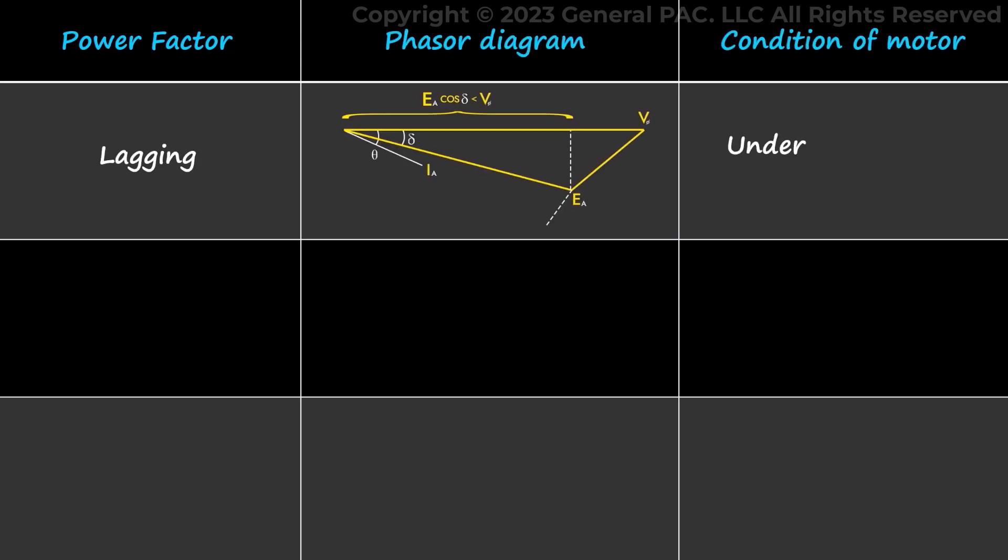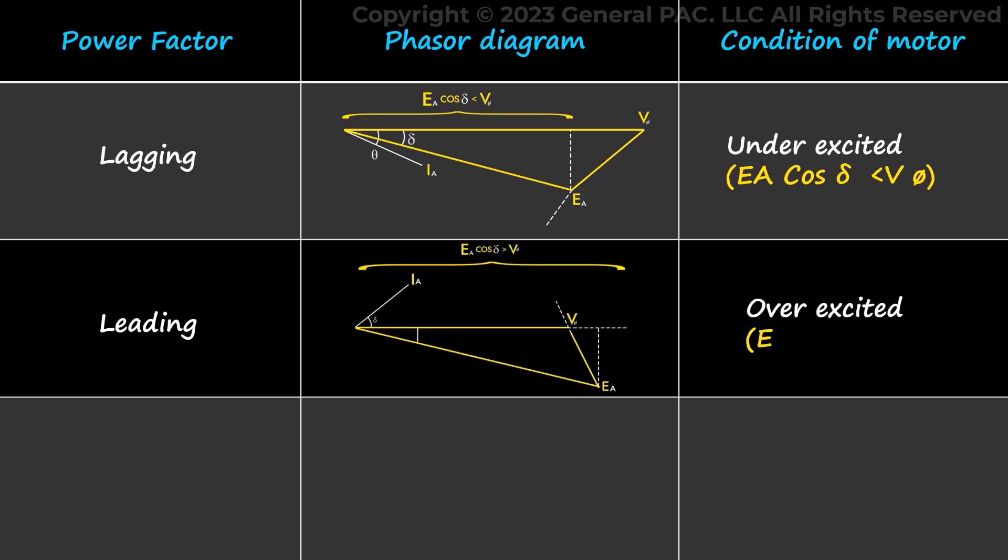This discussion can be summarized from the table as: in lagging power factor, the motor runs in underexcited mode, that is, Ea cos delta is less than V phi; while in leading power factor, the motor runs in overexcited mode, that is, Ea cos delta is greater than V phi; and in unity power factor, the motor runs in normal excitation mode, that is, Ea cos delta equals V phi.